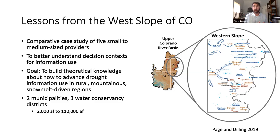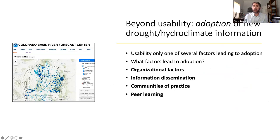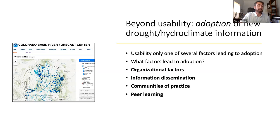In this study, our group worked with two municipalities and three water conservancy districts of varying sizes, supplying water ranging from 2,000 acre-feet to 110,000 acre-feet per year. A water provider might see information as useful, but how is that information actually adopted into the work that they're doing — either long-term planning or short-term operations? Whether information is usable is only one factor that leads to adoption. Other factors include organizational factors: what's the size of the organization, how is it structured, and is there someone dedicated to planning?